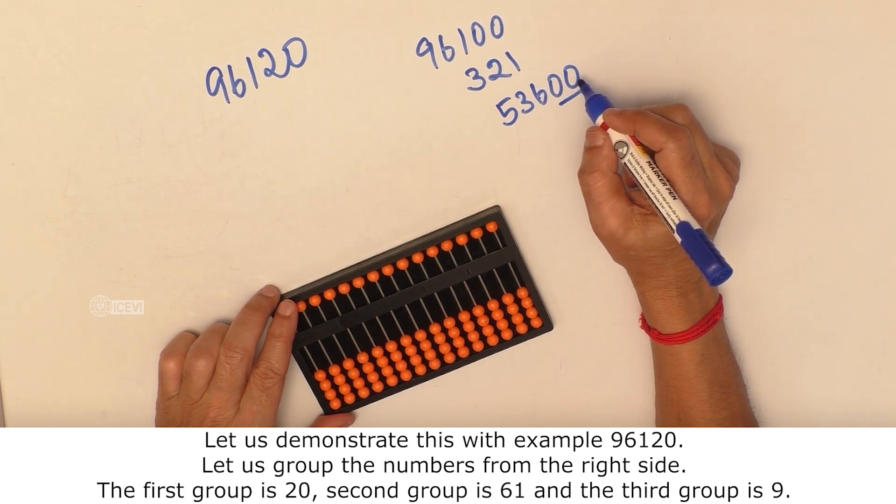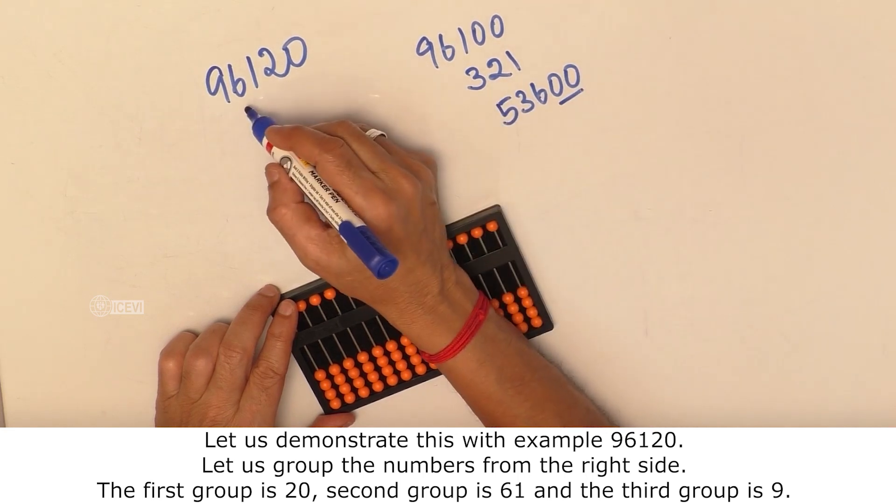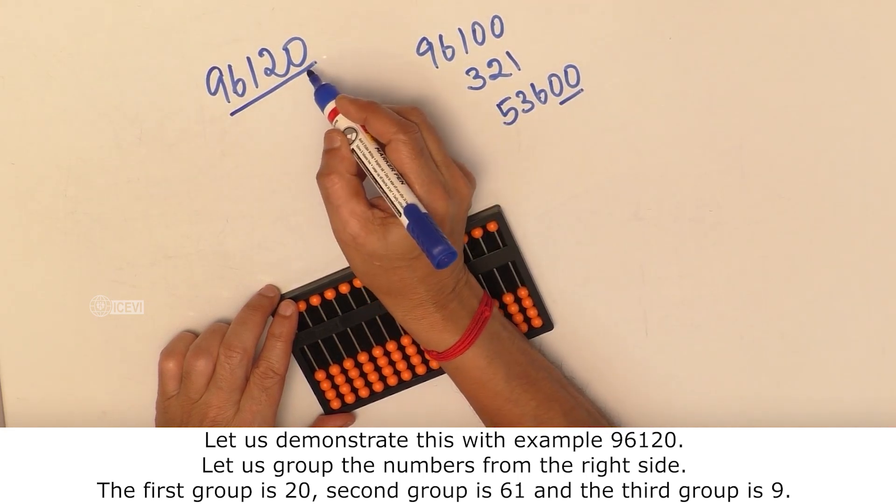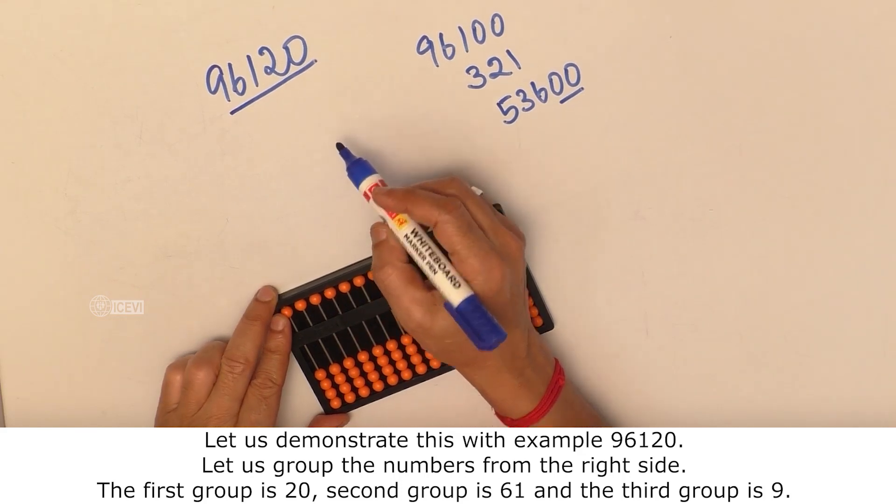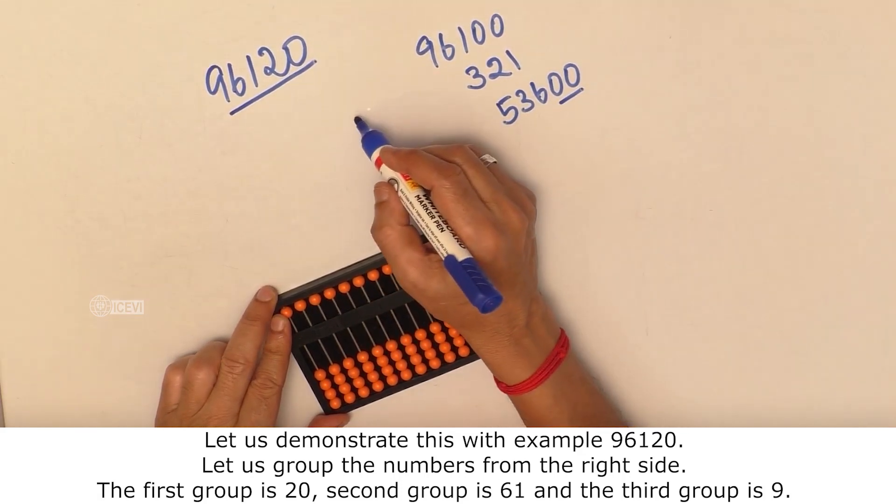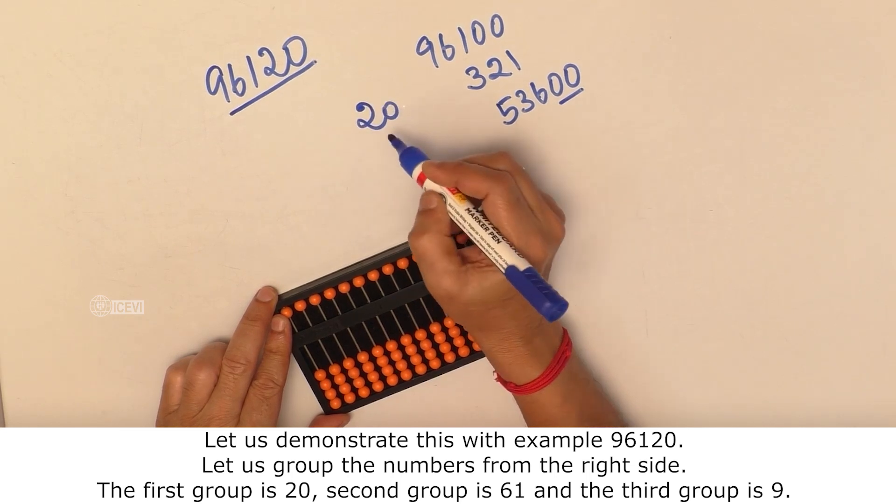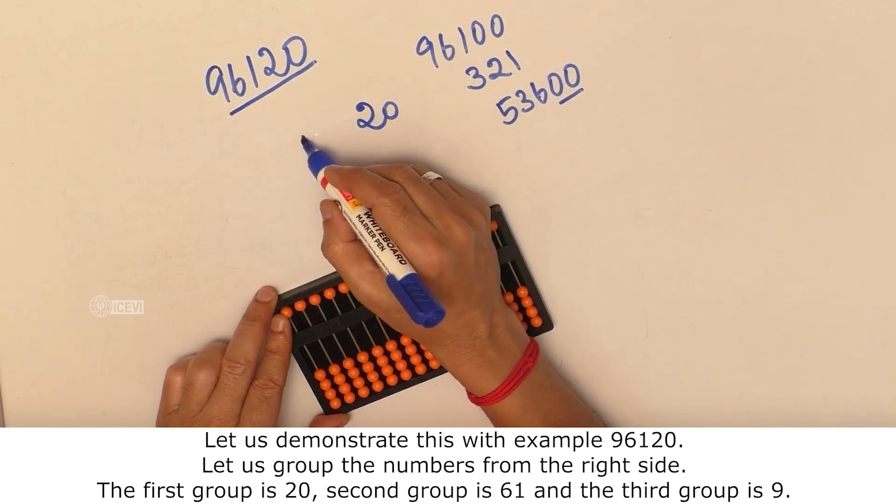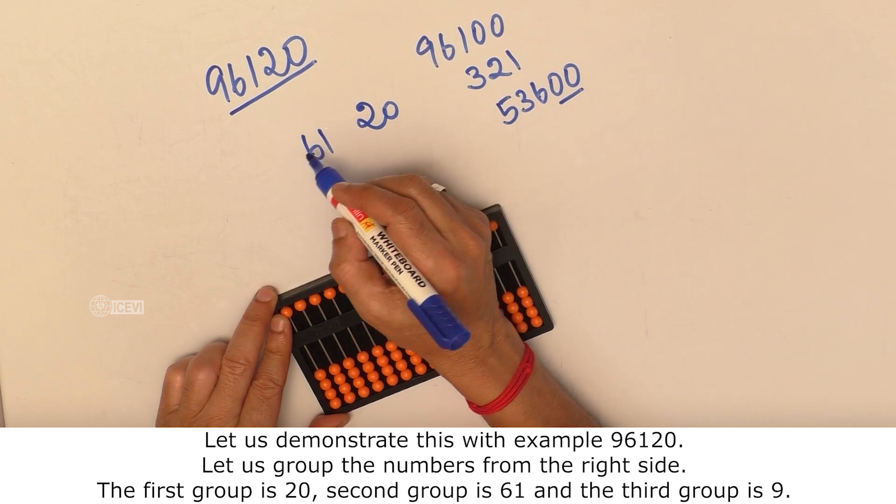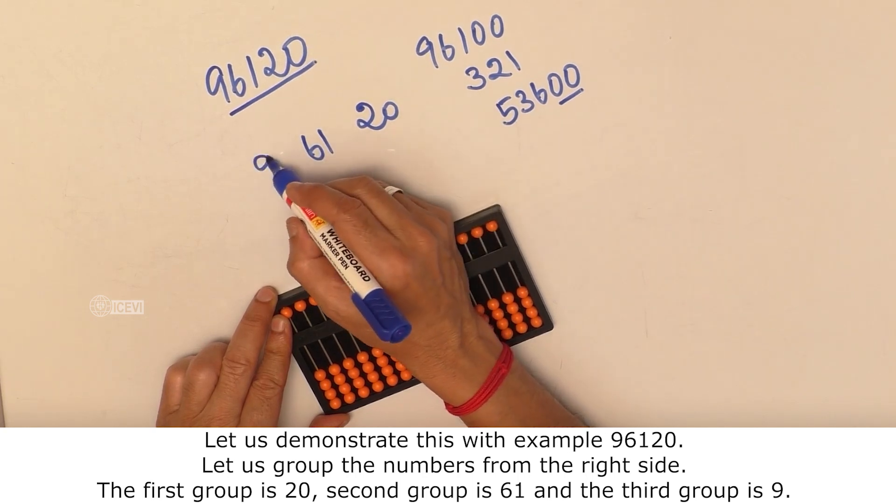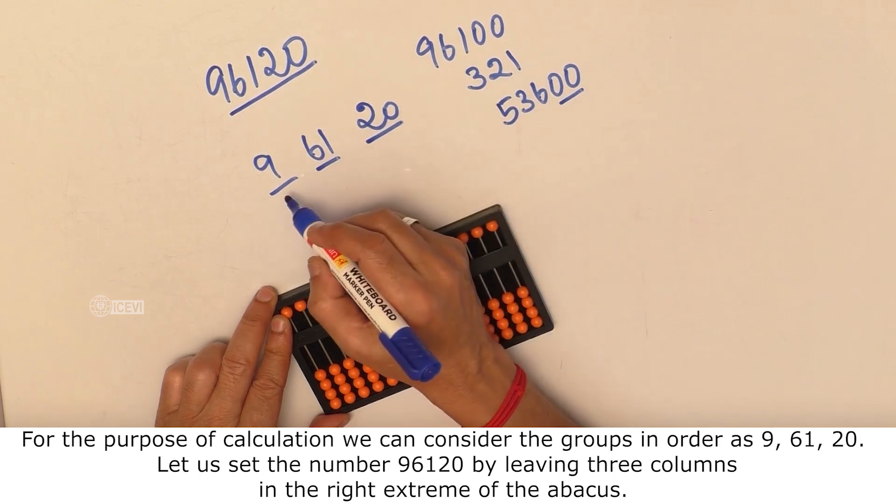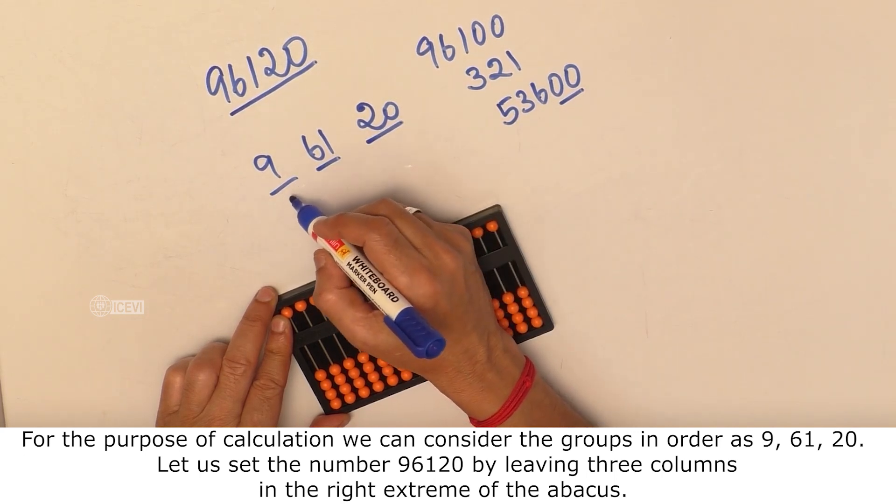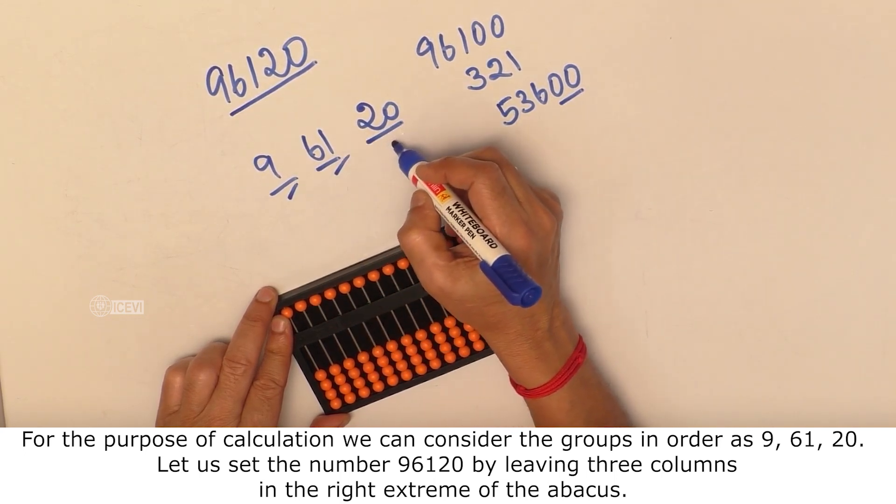Let us demonstrate this with the example 96120. Let us group the numbers from the right side. The first group is 20, the second group is 61, and the third group is 9. For the purpose of calculation, we can consider the groups in order as 9, 61, and 20.